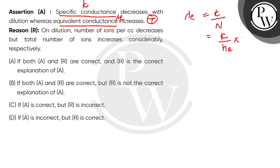This is lambda e, this is the formula. So this statement, the assertion, is true that in dilution specific conductance will decrease but equivalent conductance will increase. The reason says that on dilution, number of ions per cc decreases but total number of ions increases considerably respectively.